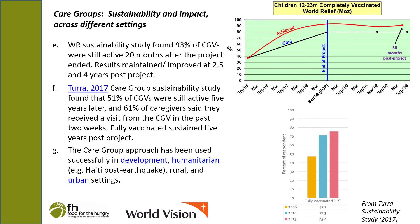Sustainability studies on care groups by World Relief and the researcher Halkino Tura found high sustainability of outcomes years afterwards. World Relief found that 93% of care group volunteers were still active 20 months after the project ended, and half of the women in communities had received a visit from the care group volunteer in the past two weeks. Measuring indicators at 2.5 and 4 years post-project found that all the results were sustained or improved. This graph shows the increase in the percentage of children fully vaccinated from baseline to final, and maintenance of that rate above 90% at 36 months post-project. A separate study by Tura in 2017 had very similar findings, so this could help Gavi with transitioning. Care groups have been used in development, rural, urban, and fragile emergency contexts. Thank you.